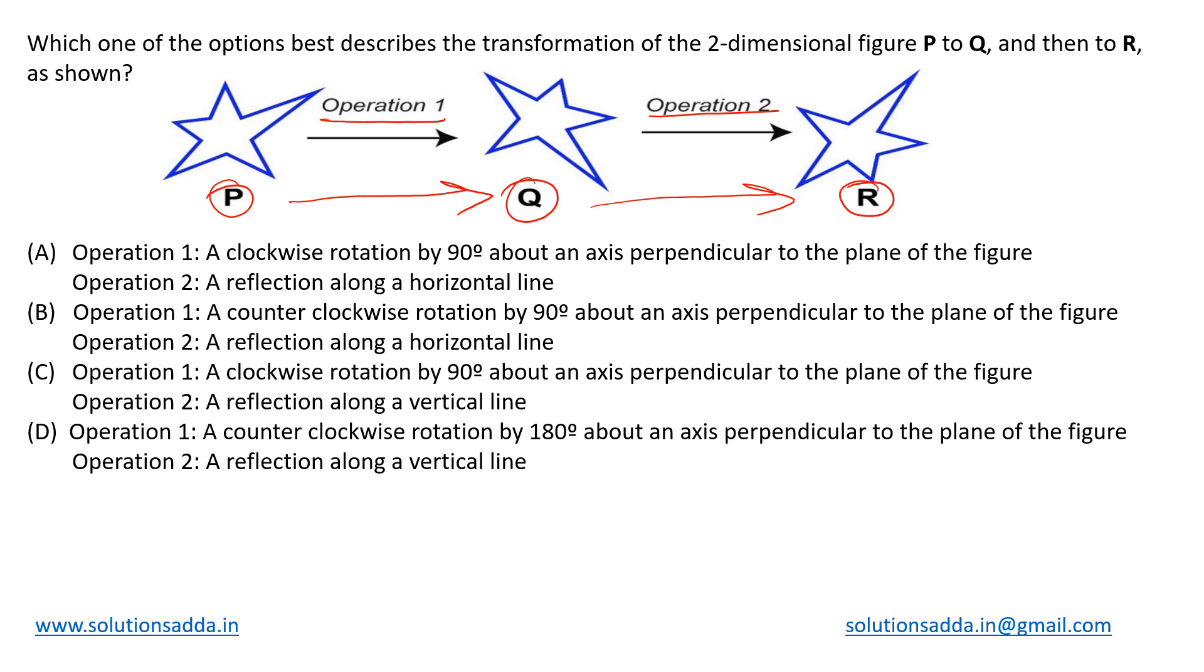Now let us first have a look at figures P and Q. You can see that the longest leg of this star has turned over here, so it is not exactly opposite, it has come somewhere like this, like it has been rotated by 90 degrees.